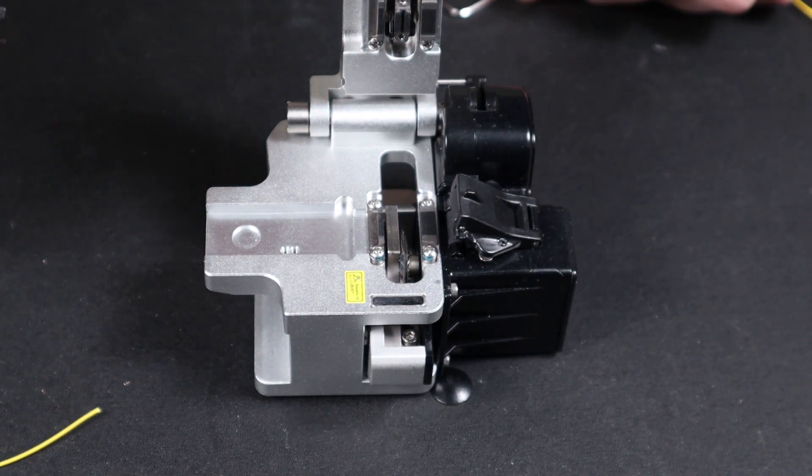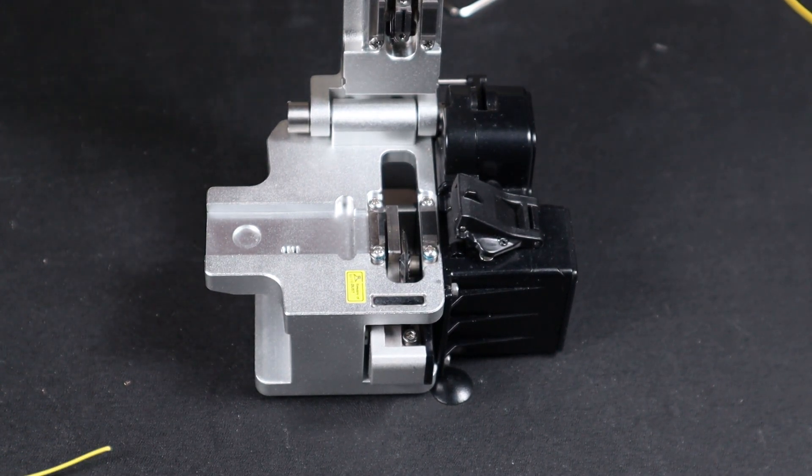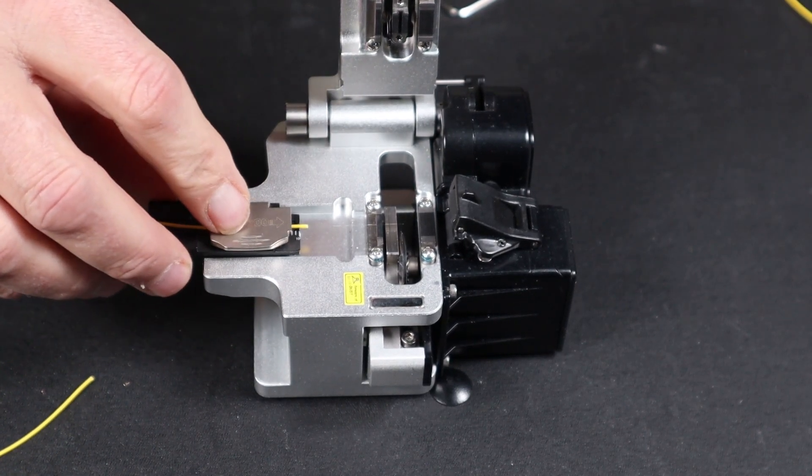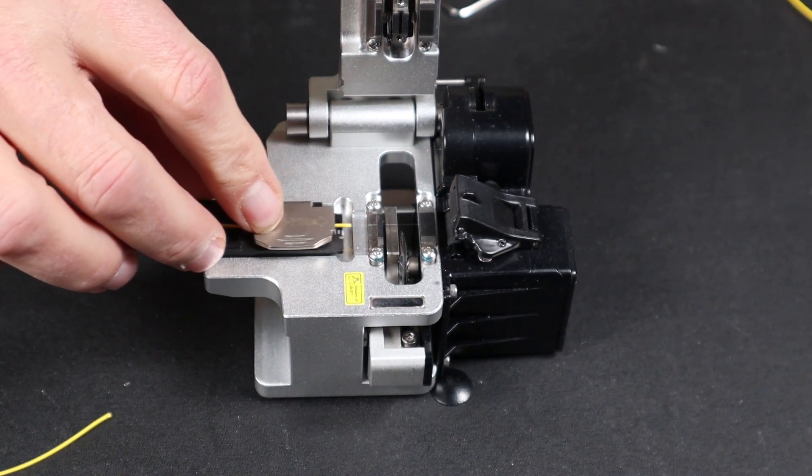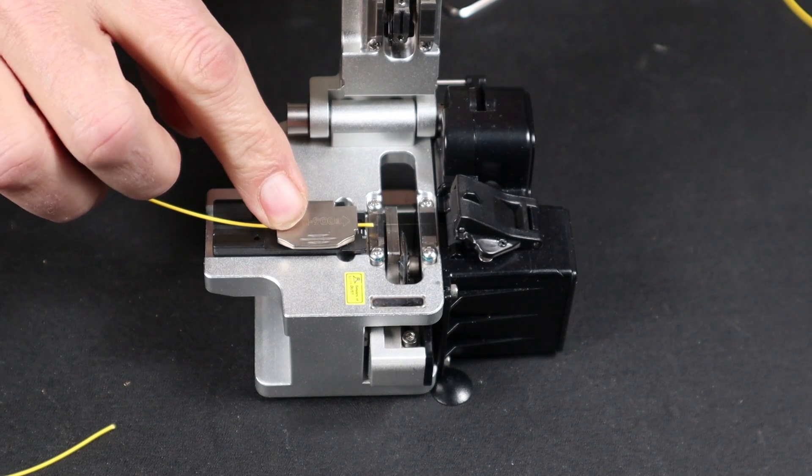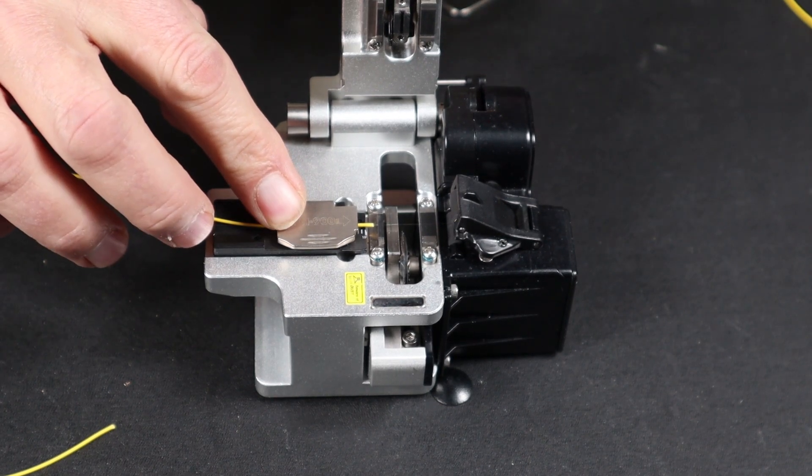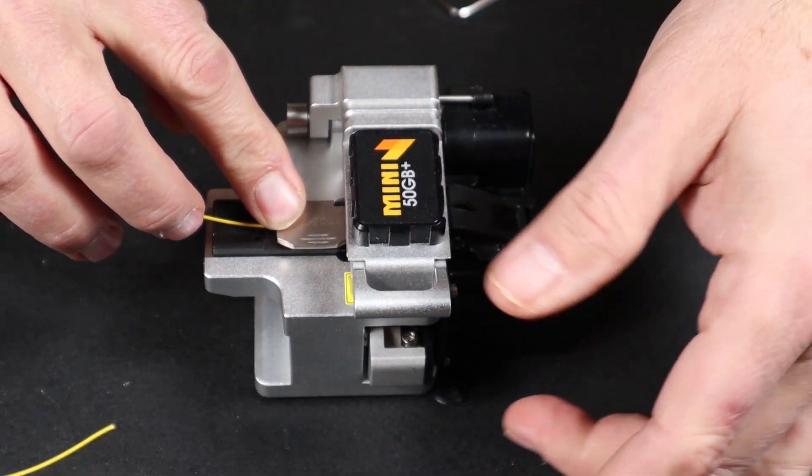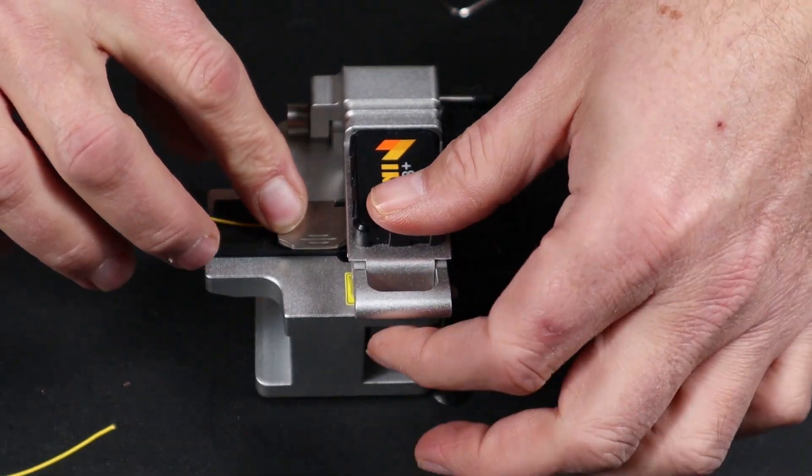At this point, you can take your fiber that's in the fixed holder and just bring it in. You do not have to adjust the fiber. Push it all the way up. Close your lid. Activate your cleaver.